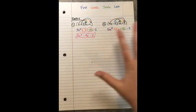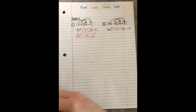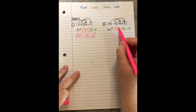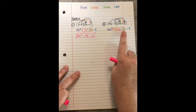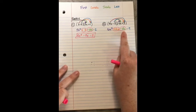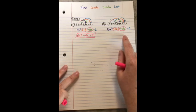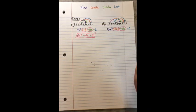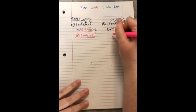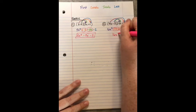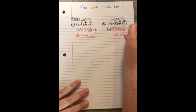We successfully did FOIL. Now combine like terms: positive 12x with negative 12x — 12 minus 12 is 0, so those two cancel out to nothing. Our final answer is 16x² − 9.